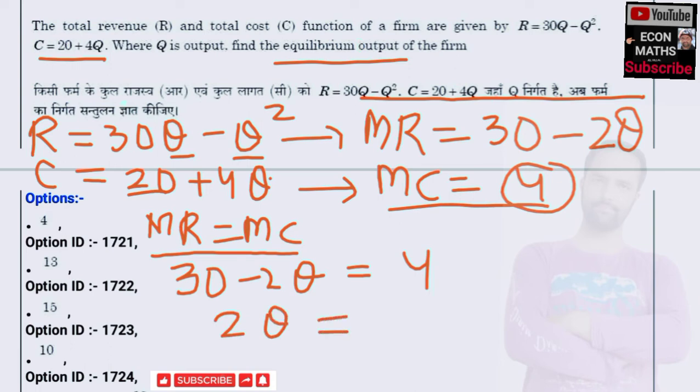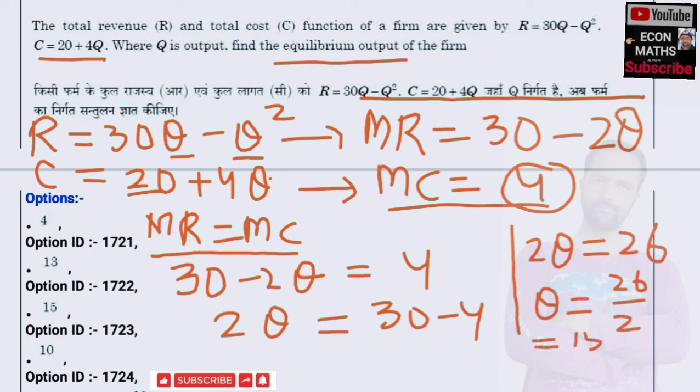Transposing 2Q to the other side gives us 2Q = 30 - 4 = 26. Therefore, the equilibrium level of output is Q = 26/2 = 13.